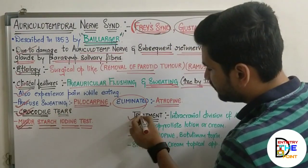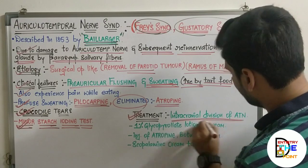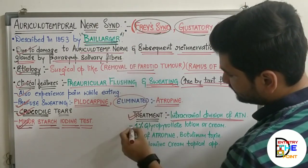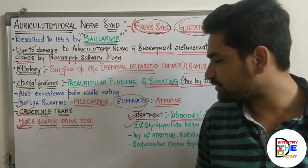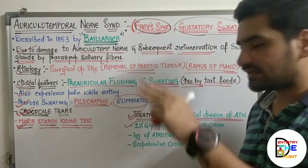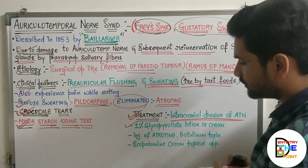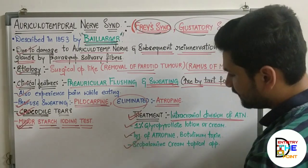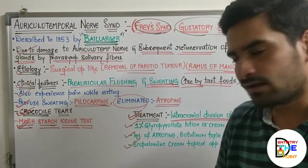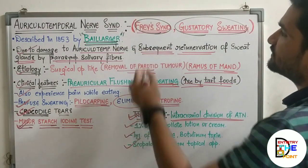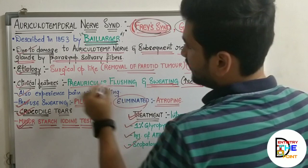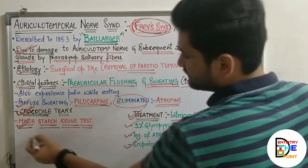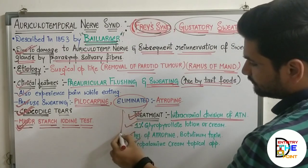Regarding treatment of Auriculotemporal Nerve Syndrome: first, intraclinical division of the auriculotemporal nerve has shown effective results. Second, one percent glycopyrrolate lotion or cream can also be used to avoid sweating and is effective for up to three days. These are the treatment modalities available for this syndrome.